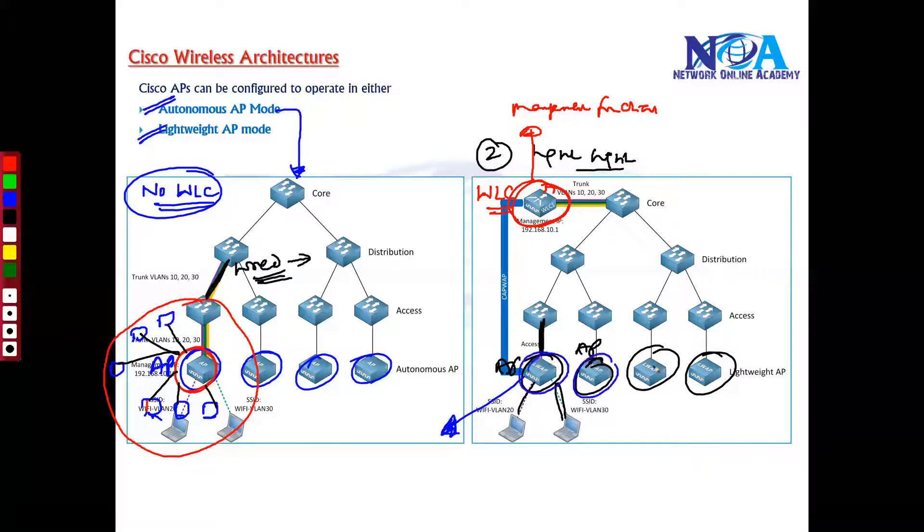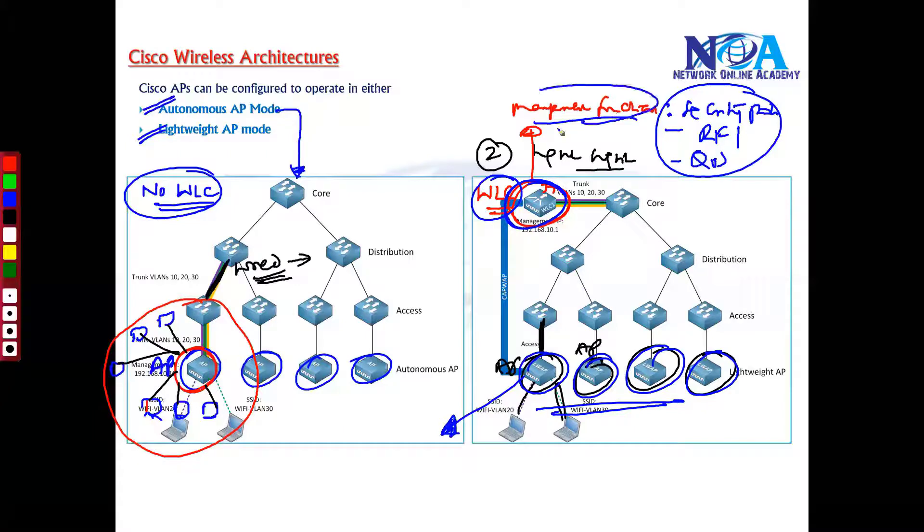But there are some management-related functions like applying security policies, authentication process, selecting the radio frequency signals or channels, or even applying quality of service. These things can be moved to the centralized device, and that is what your wireless LAN controllers will do. Most of the management-related tasks are shifted to the WLC.